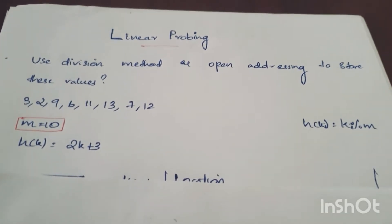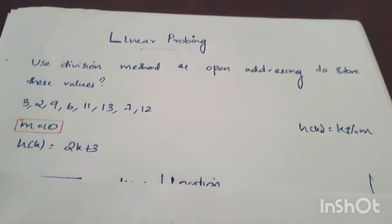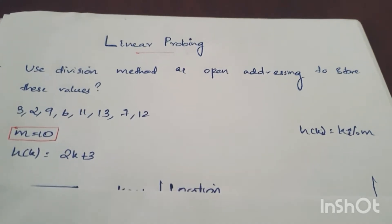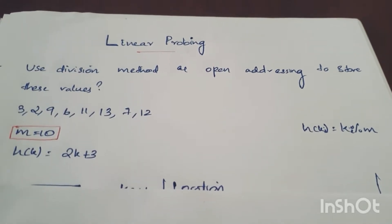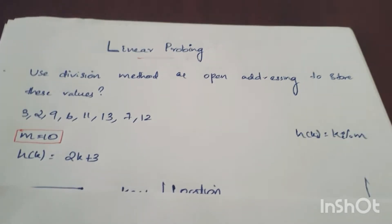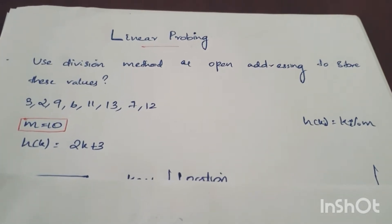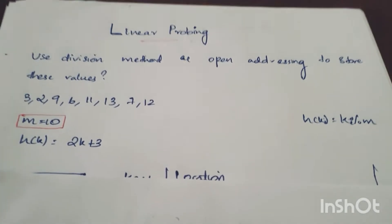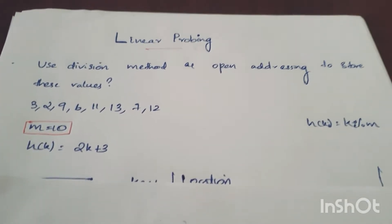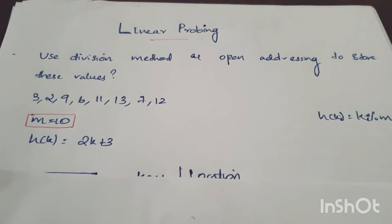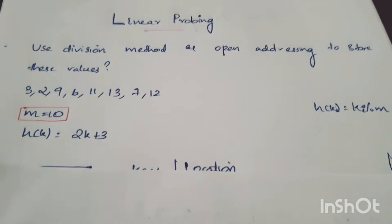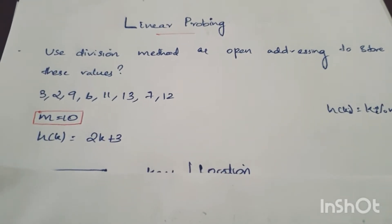There are three sub-techniques: Linear Probing, Quadratic Probing, and Double Hashing. First, we will solve Linear Probing. The question is to use the Division Method and Open Addressing to show these values.